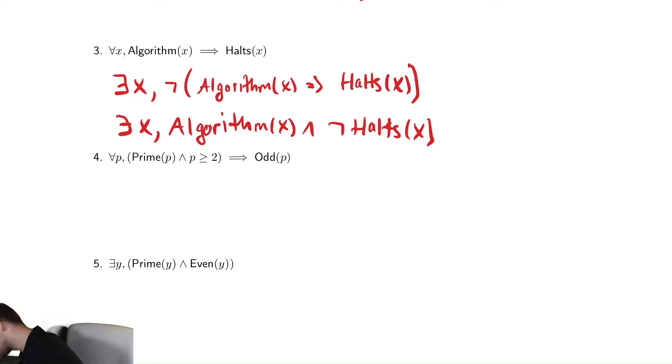Let's do the next one a little faster then. We write this as there exists a p such that we have an if-then statement inside of our quantifier. The negation of an if-then is not an if-then. So p implies q. The negation is p and not q. The p in this case is this first thing. So we write this as prime p and p is greater than or equal to 2 and not odd p.